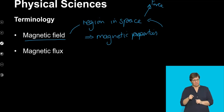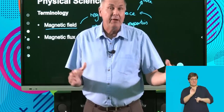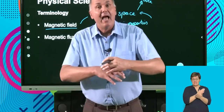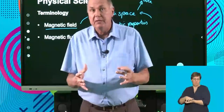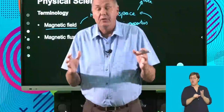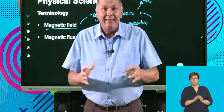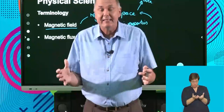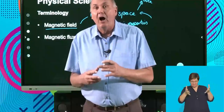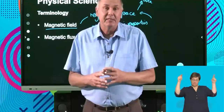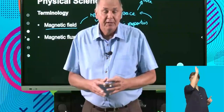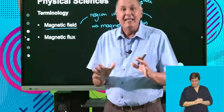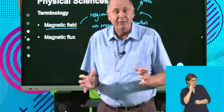A magnetic field has a certain shape, a certain pattern. It's strong in some places and weak in others. Around the earth there is a magnetic field, and that protects us from some very harmful rays from the sun that are part of what we call the solar wind. We must never underestimate the idea of a magnetic field.